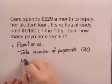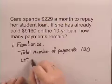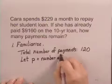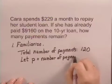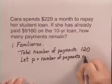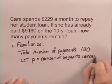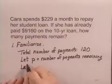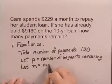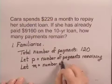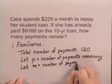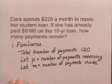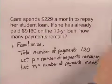We need to define a variable. Let's let P equal the number of payments that remain, and we'll let M equal the number of payments that were already made. That gives us enough to go on to the next step, which is to translate.